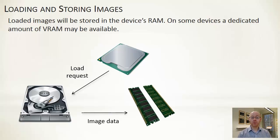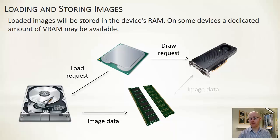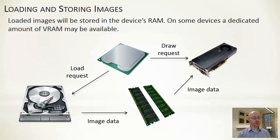That will be pulled into memory and stored in memory. Any time that we have a draw request, we will be copying from memory sections of the entirety of the bitmaps that we've loaded in, and they get pushed out onto a special area in memory that gets displayed — the pixels shown on the screen.